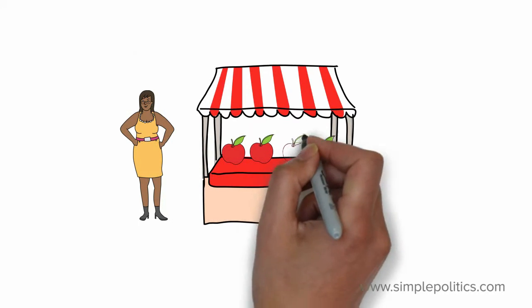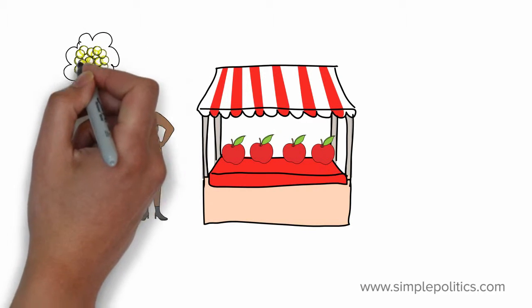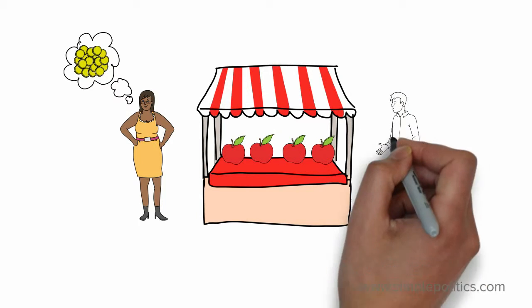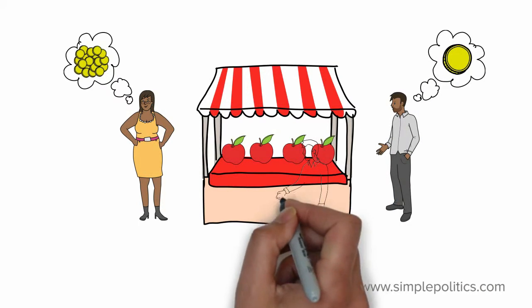So this lady wants to sell apples. She wants as much money as possible for them. This man is hungry and wants to buy an apple for as little money as possible. If they're both going to be happy, they need to find a price they can both agree on.